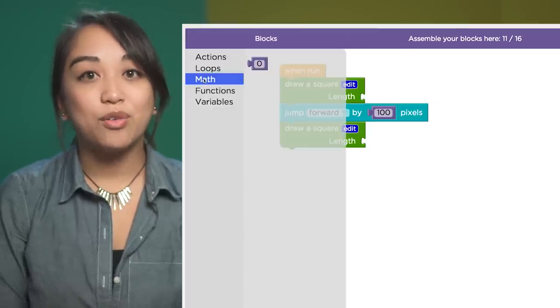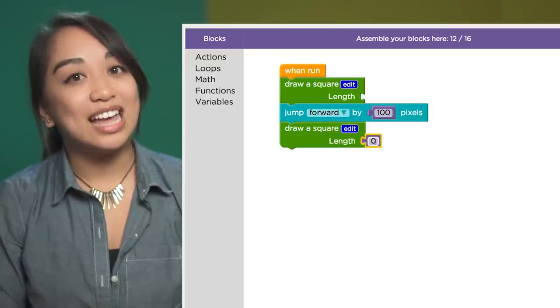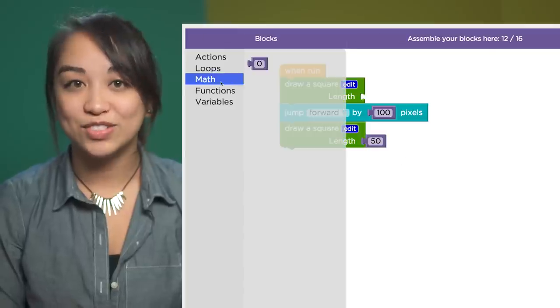Drag a number block from the math category and place it in this space. See how you can use the function again and again with different lengths to make squares of different sizes?